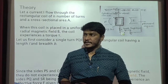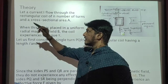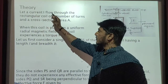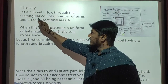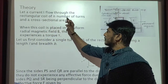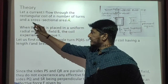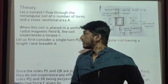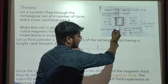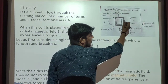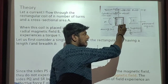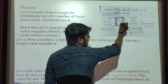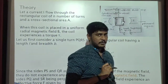Let us see the first point of theory. Let a current I flow through a rectangular coil of N number of turns and cross-sectional area A. In the block diagram, this is the copper coil which has N number of turns and cross-sectional area A.